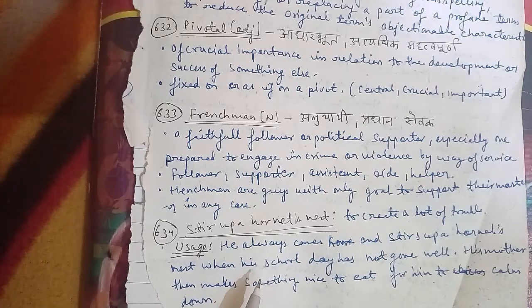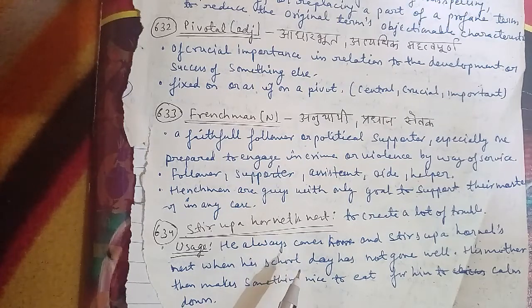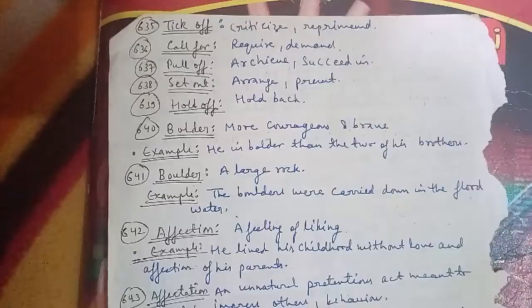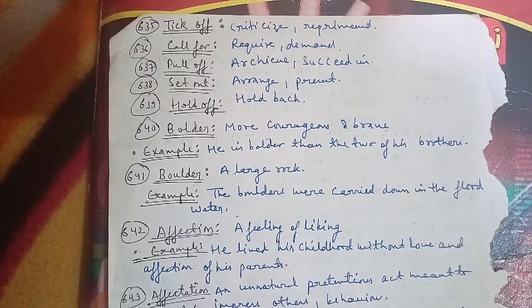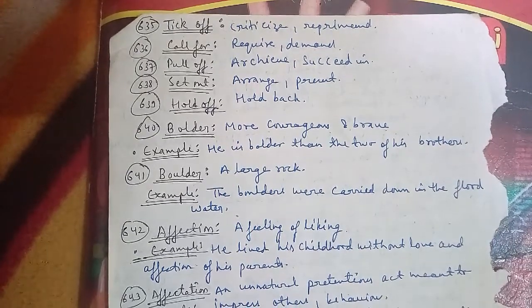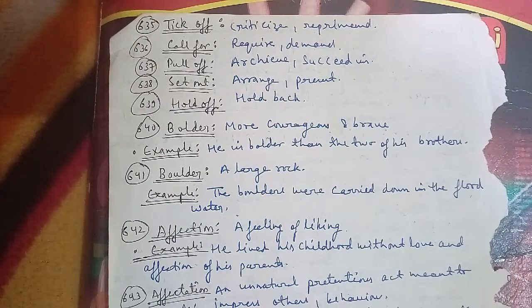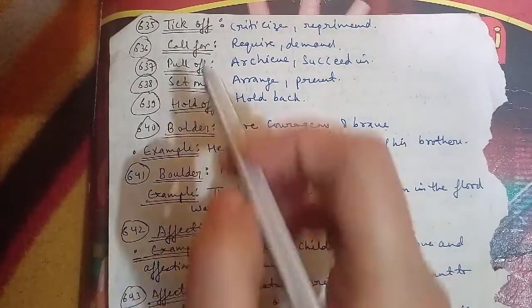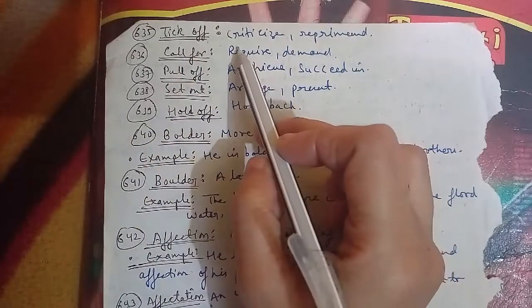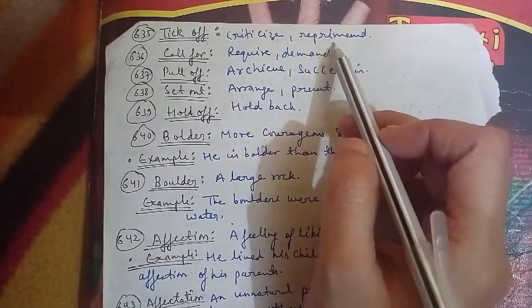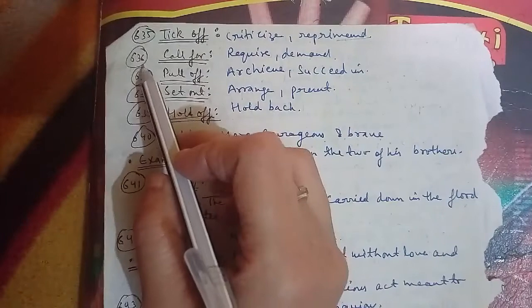The 635th word is 'tick off', which means to criticize or reprimand. The 636th word is 'call for', which means to require or demand. The 637th word is 'pull off', which means to achieve or succeed in doing something difficult.